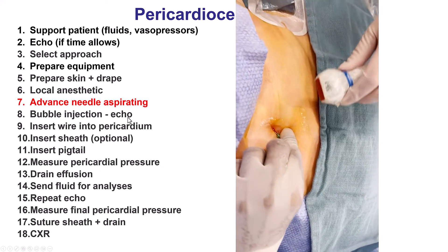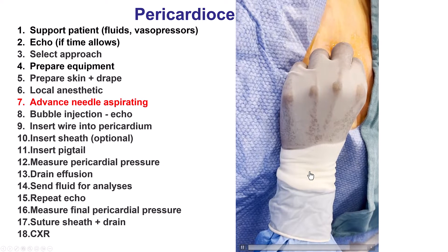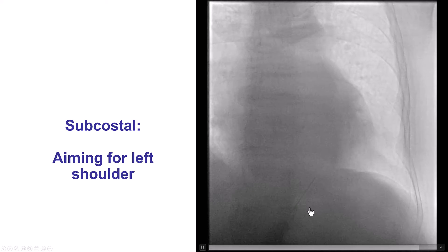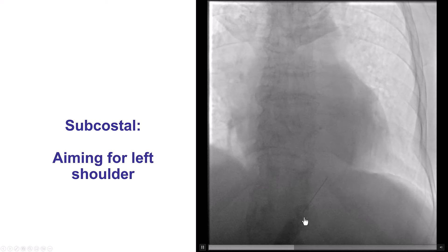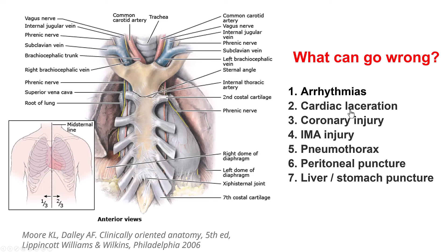Once fluid returns, we leave the needle in for the next step, which is to inject bubbles under echocardiographic guidance to confirm entry into the pericardial space. Here is an example of fluoroscopy with the subxiphoid approach, aiming towards the left shoulder. Structures that can be affected include the internal mammary artery, coronary arteries, lungs — causing pneumothorax — and for the subxiphoid, peritoneal, liver, or stomach puncture.